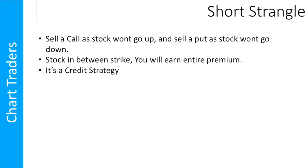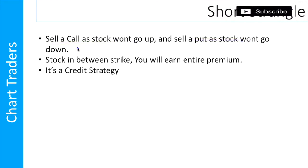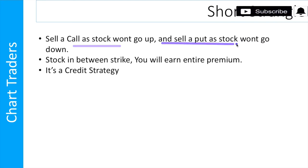If you believe that a stock won't go up and won't go down, and you have a strike price to sell — the stock won't go above it and won't go below it — then you can sell a call at 12,200 and sell a put at 11,800. You choose that strike price based on your belief about the range.